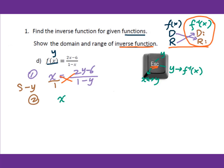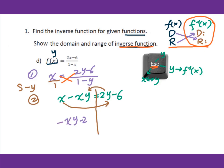That gives x minus xy equals 2y minus 6. Since we are solving for y, this is a linear pattern equation, so we move all y terms to one side. Moving xy over gives negative xy minus 2y equals negative x minus 6.